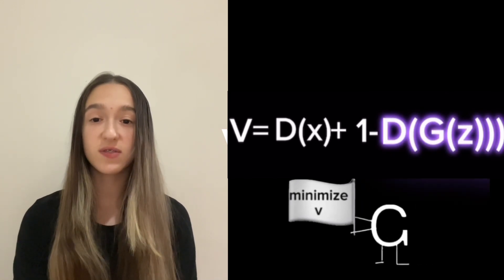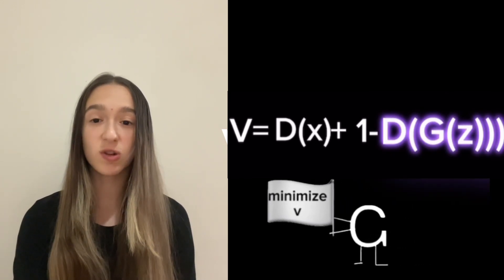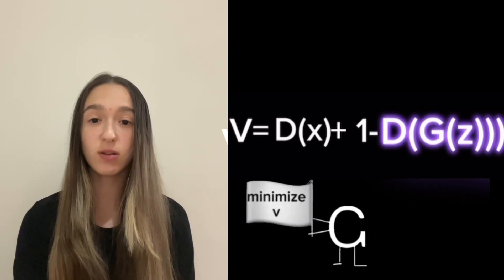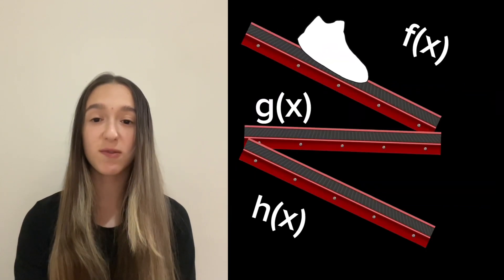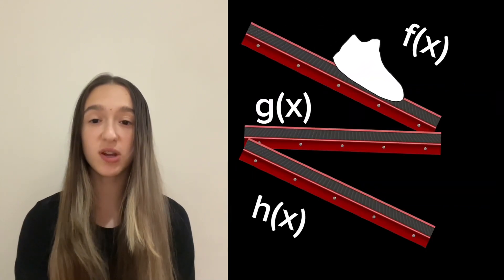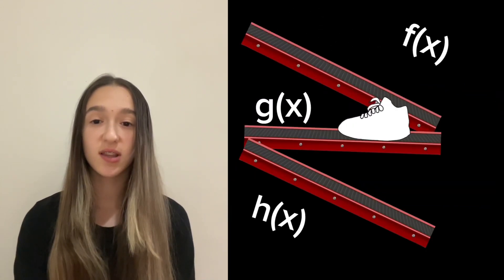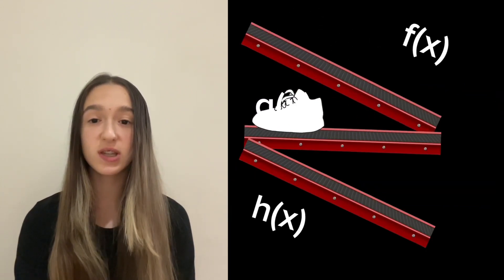D(G(z)) is the discriminator's guess of how likely it is that the fake shoe is real. Each layer performs specific operations on Z, like adding shoelaces or a sole, until eventually the network produces generated data that has some resemblance to a sneaker.